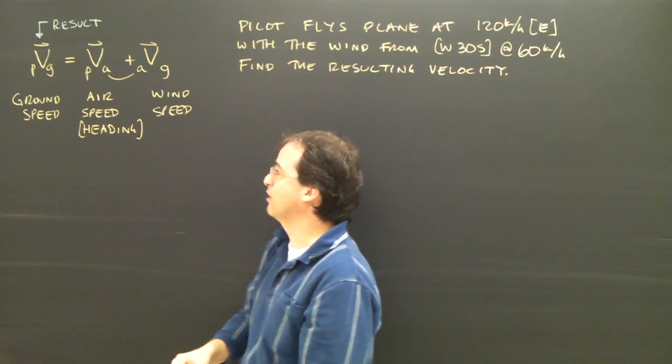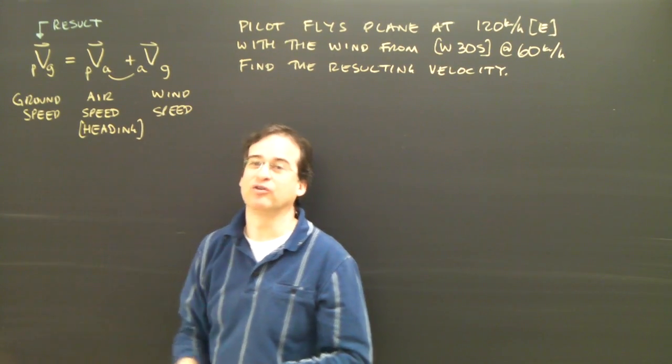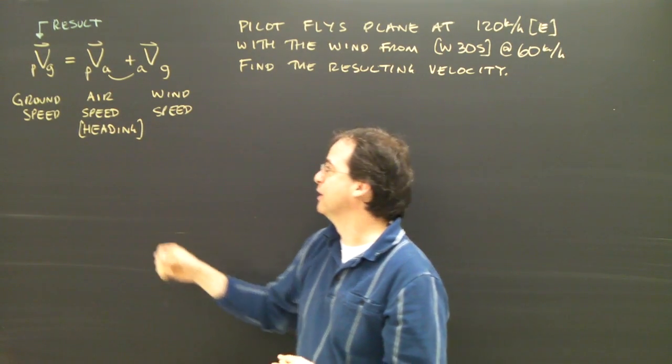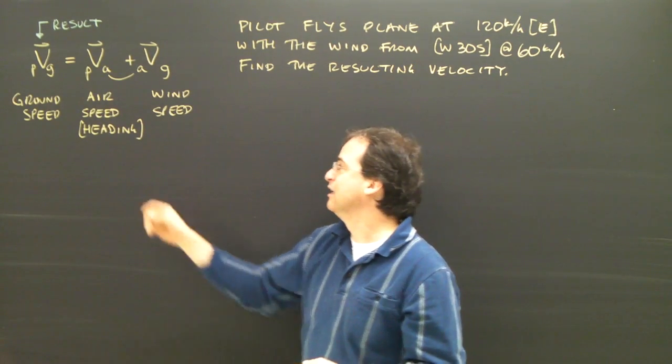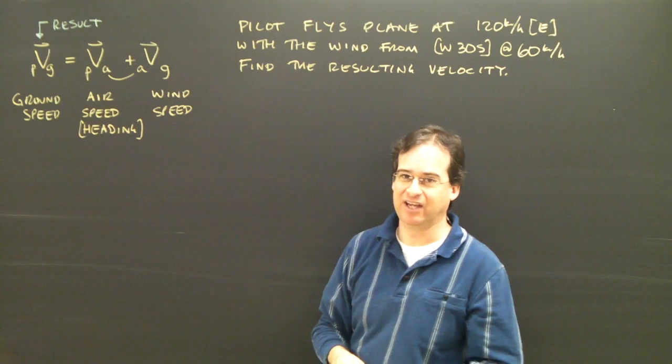Some of the words that might come up, the plane relative to the ground, the result, is often called the ground speed. And that includes direction for it. We call this, the speed that the plane is flying, the air speed. And the direction it's flying is referred to as the heading.